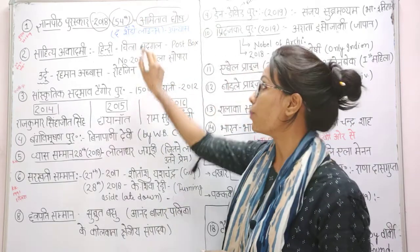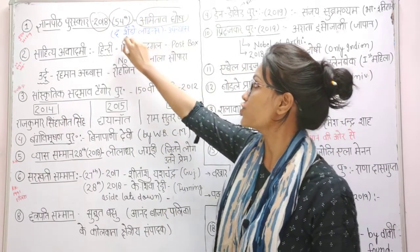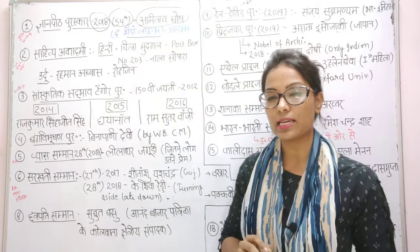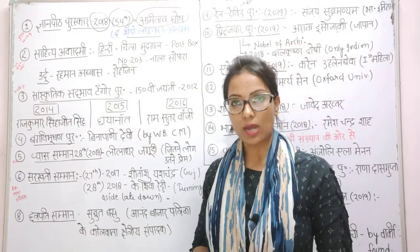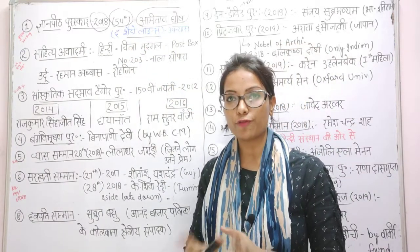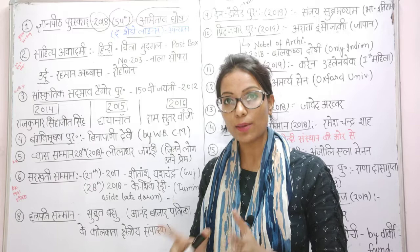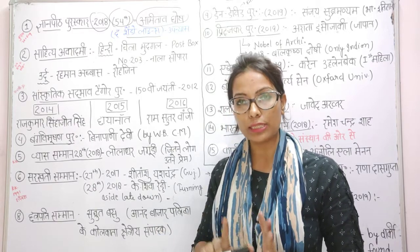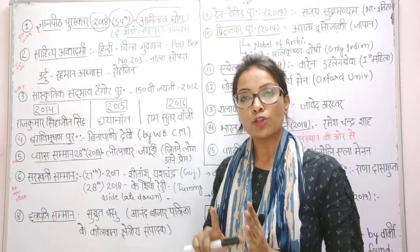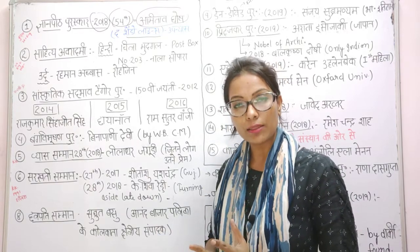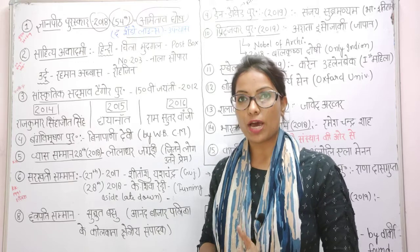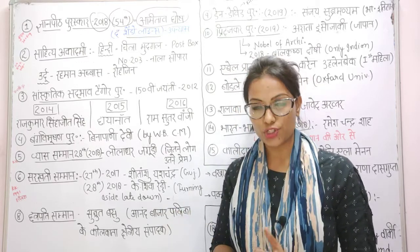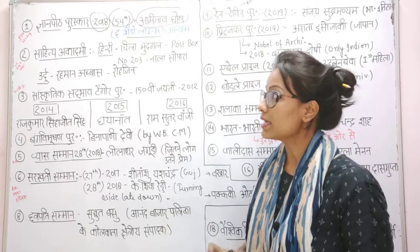Amitabh Ghosh is known for his work 'The Shadow Lines', and the Shadow Lines was associated with the Gyanpith Puraskar. The 54th edition was the one given in this first context. The 53rd Gyanpith Puraskar was given to Krishna Sokhati.